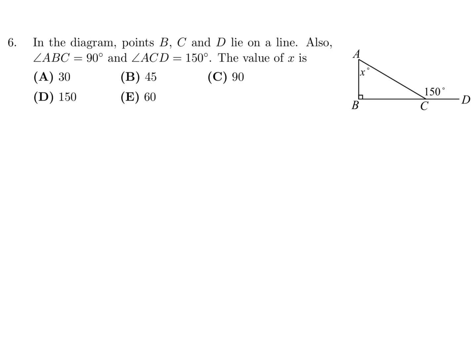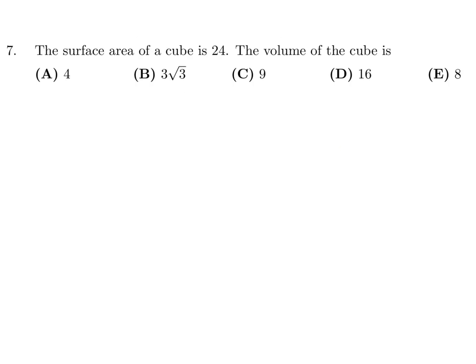In the diagram, points B, C, and D lie on a line. Also, angle ABC is 90 and angle ACD is 150. The value of x is? Okay, so this angle right here is 180 minus 150, so that's 30, right? Because the angles have to add up to 180 on the line. And then the sum of the angles of a triangle are 180. So we got x, and this is 90 degrees, and that's 30. And then when you solve for this, you get x equal to, I believe, 60. So 6, the answer is E.